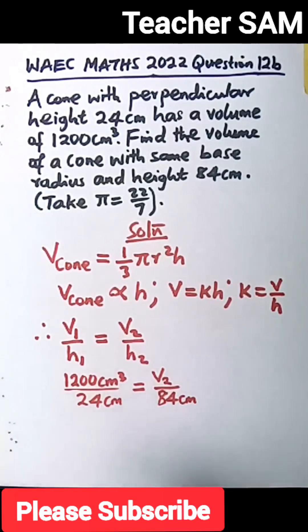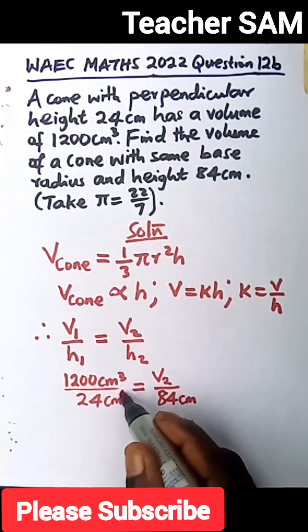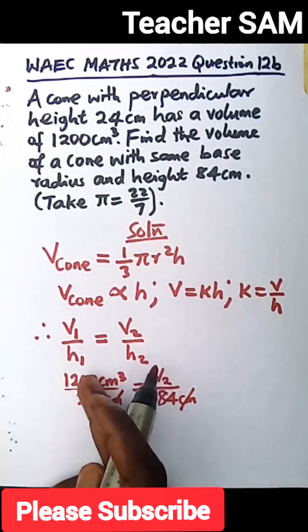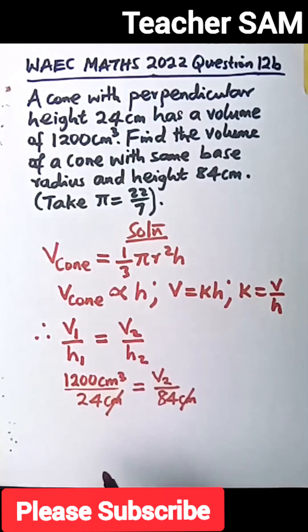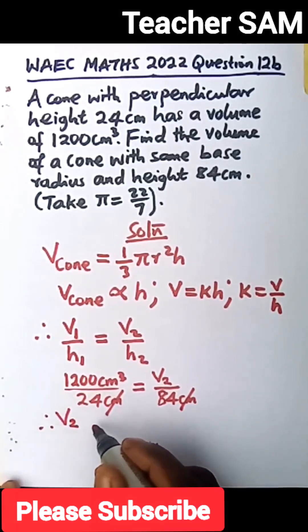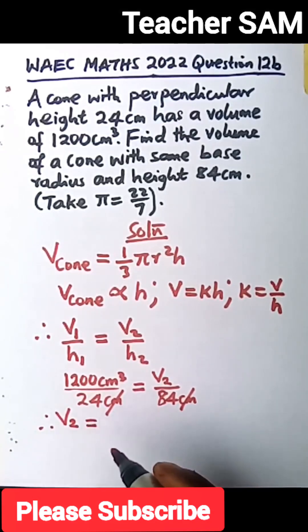By the time we cancel some of the units, we will be left with this. The unit can take care of the unit. So we are only left with volume here, cm cubed. We can move on that our v, therefore, our v2, the volume required of the second cone...